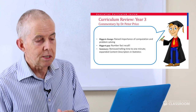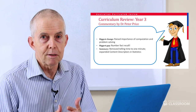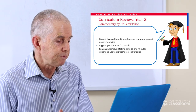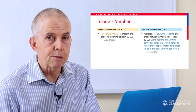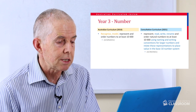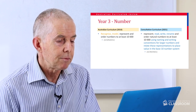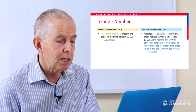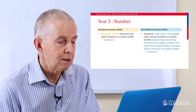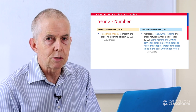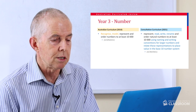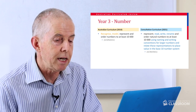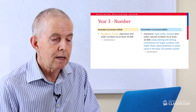The content descriptors in statistics have been expanded, as they have in many year levels. Looking at the first number content descriptor for Year 3, the text has been expanded a lot. The basic content descriptor hasn't been changed: represent and order numbers to at least 10,000. It included 'recognize and model' — those verbs have been changed, but they're still implied. So we now have represent, read, write, rename and order.